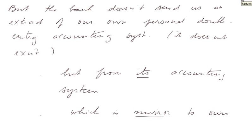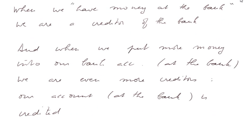But the bank does not send us an extract of our own personal double-entry accounting system — usually it doesn't exist. It sends us an extract from its accounting system, which is a mirror of ours if we had one. When we have money at the bank, we are a creditor of the bank, and when we put more money into our bank account, we are even more creditors. Our account at the bank is credited. That's why it looks contrary to the rule. The value coming into our firm is a debit, but this rule is correct.